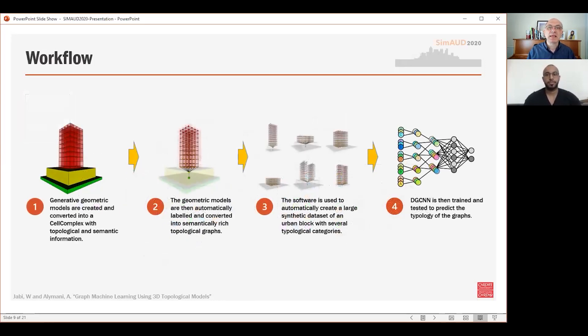So, the workflow begins with building a synthetic dataset of 1000 cases by defining a parametric generative model of a theoretical urban block. In this block, you have three main entities: the ground, an optional podium, and one or more building blocks placed on either the podium if it exists or directly on the ground.